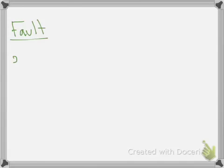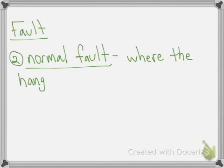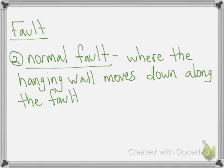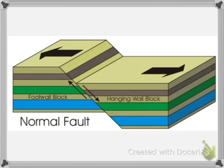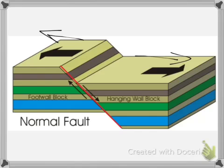When you have tension, you experience a normal fault — where the hanging wall moves down along the fault line. Caused by tension: reverse fault has the hanging wall moving up; normal fault has the hanging wall moving down. In the diagram, the rock is getting pulled apart, which causes the hanging wall — or hanging block — to fall down. You can see that the brown, green, and blue sections no longer match up. Draw this diagram, then we'll look at real pictures of normal faults.